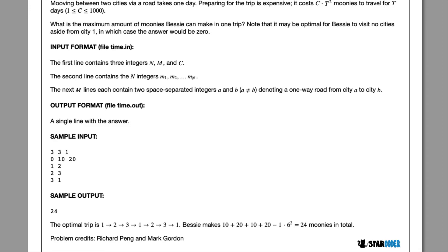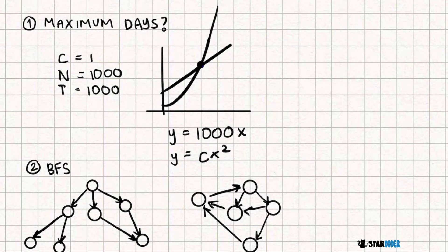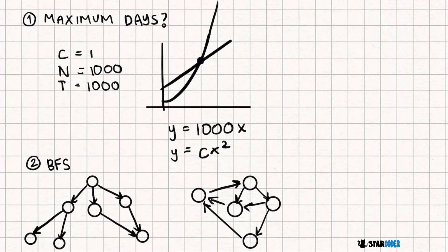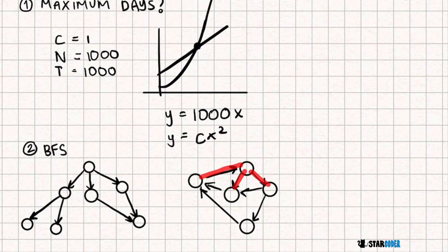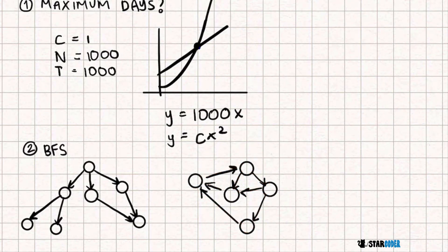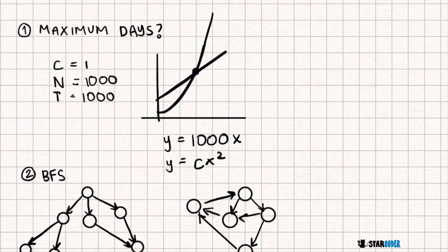One key thing we notice is that there have to be cycles, since we start and end at city one. If we just did a standard BFS with no upper limit, we'd loop forever. So we're still going to do a BFS or DP, but we need to find the maximum number of days we'd ever want to travel.